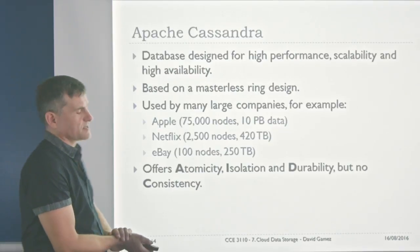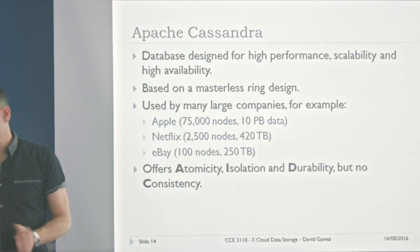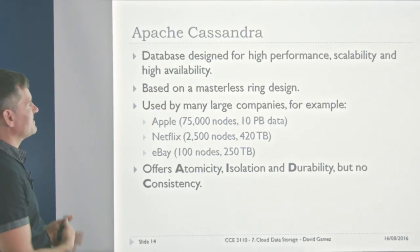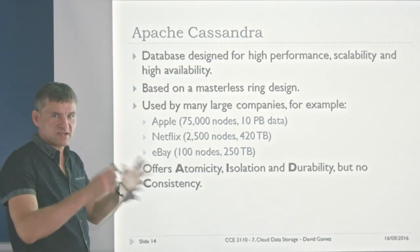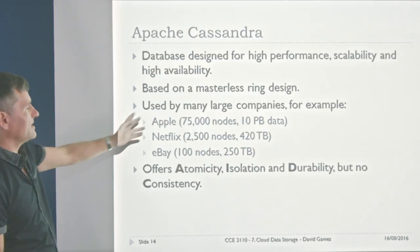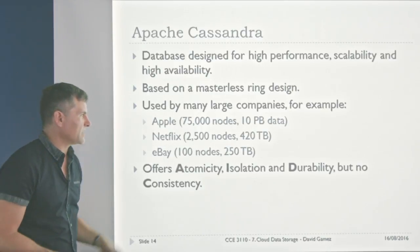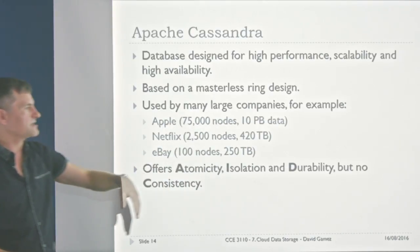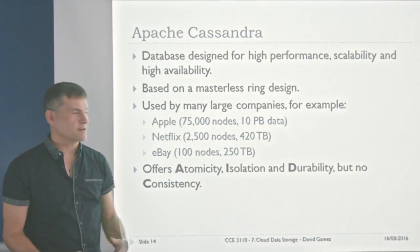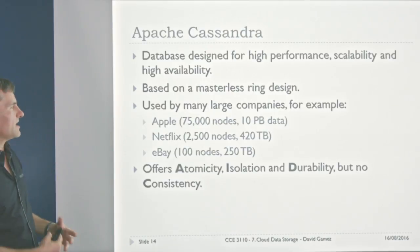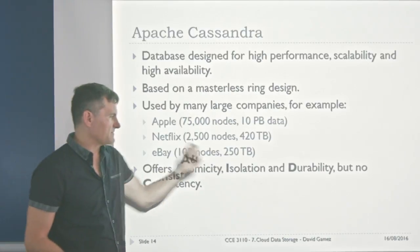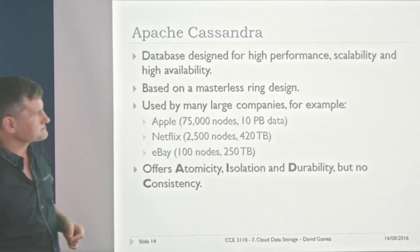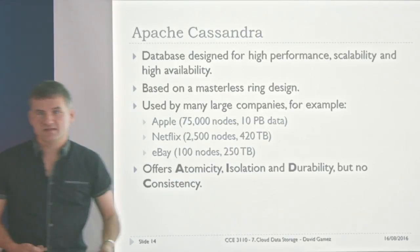A couple of NoSQL examples: MongoDB is a popular document database where for each key or ID you have a JSON document, and you can do searches within those documents. Apache Cassandra is used by Apple, Netflix, and eBay — it's high performance, highly scalable, with a ring design. It can handle 75,000 operations and 10 petabytes of data. It gives you atomicity, isolation, and durability, but no consistency — that's the price you pay for this kind of scalability.